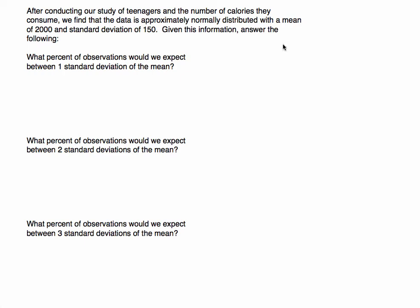Now we want to look at what's called the empirical rule. The key here is we're no longer just looking at the mean and standard deviation of a random set, but we know a little bit more information. After conducting our study of teenagers and the number of calories they consume — the previous question we saw — we find that the data is approximately normally distributed. That's the key. We already saw that it had a mean of 2,000 and a standard deviation of 150.